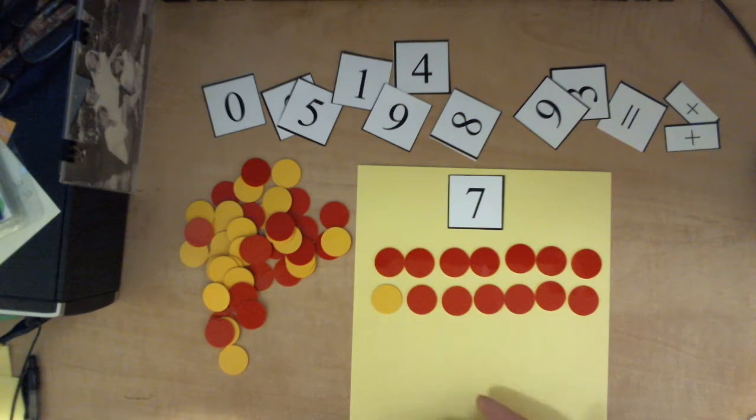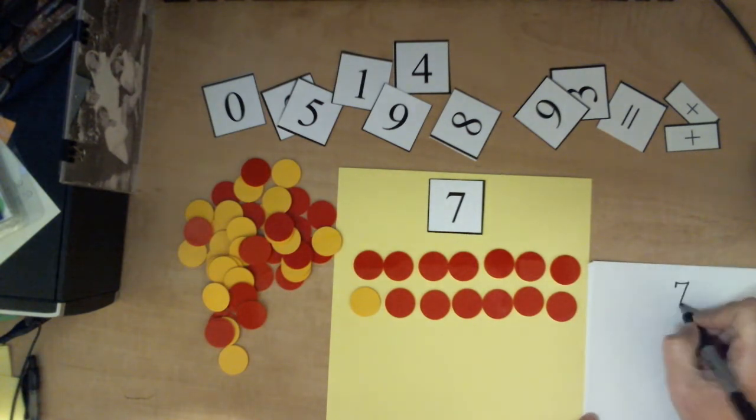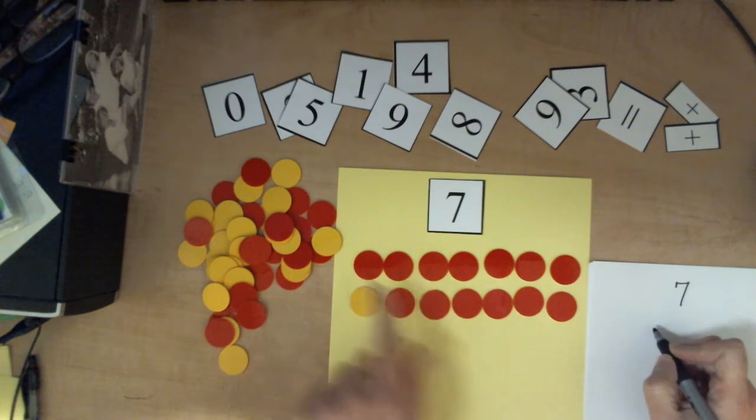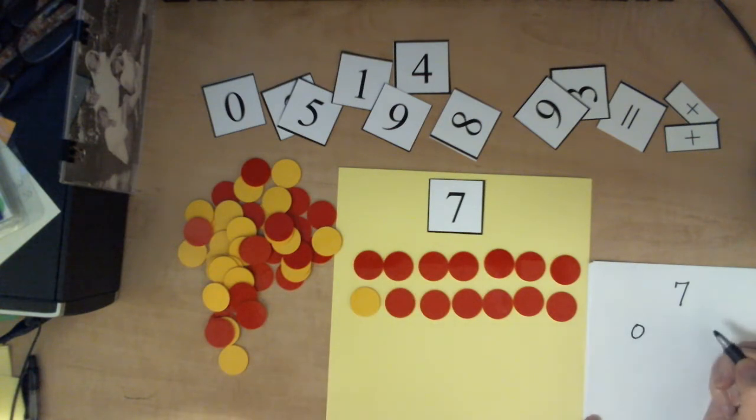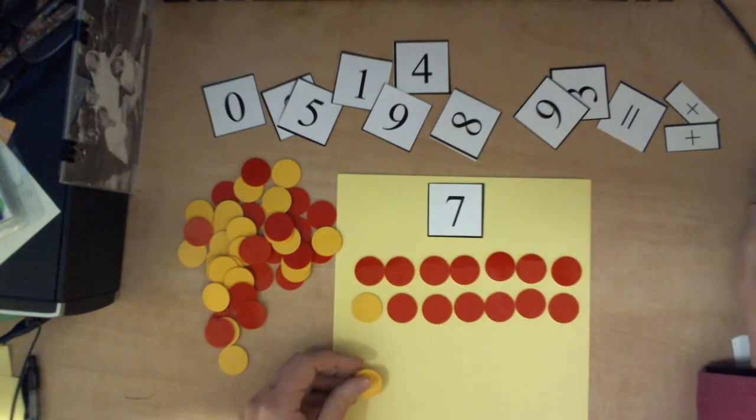An extension of this could be you're working with it and you have them write that. So they have the number seven and it's I have zero yellow and I have seven red or I have one yellow and I have six red. And then you would keep doing this. So I'm going to show you that.